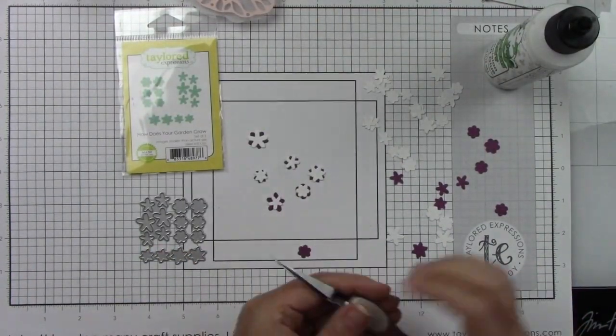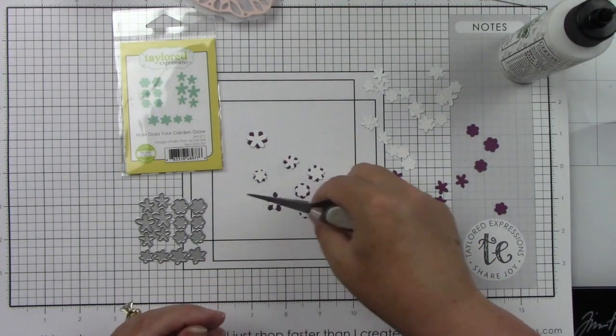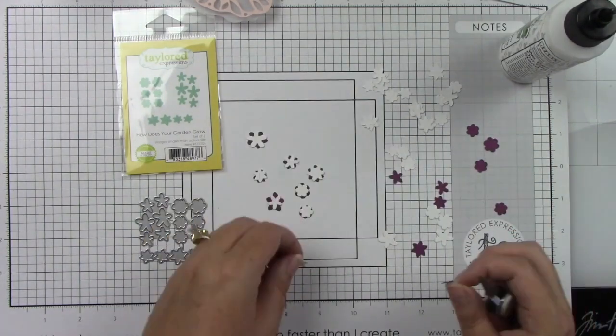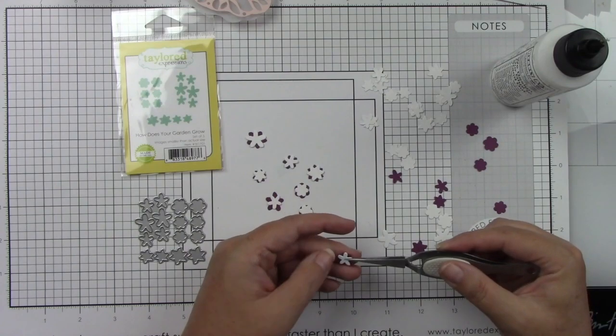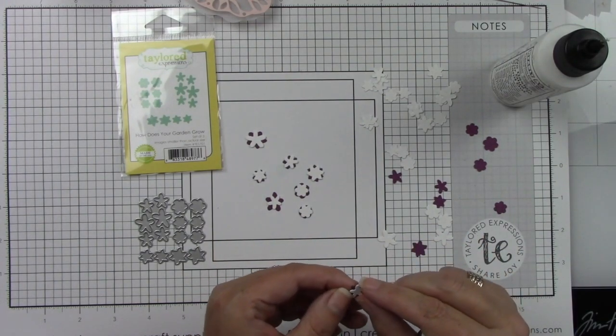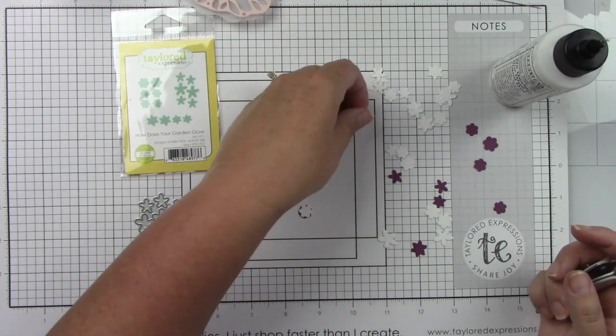Then I die cut from the How Does Your Garden Grow with Sugar Cube cardstock and the brand new Passion Fruit. And I wanted a little pop of this purple, but I didn't want it to be so much.